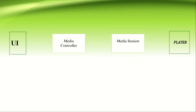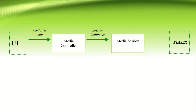The media controller helps us control the player — for example, play, pause, or anything else. We issue controller calls that go from the UI directly to the media controller, and the media controller talks to the media session, not directly to the player. We also have session callbacks implemented by the media controller to help control the playback state. Then the media session tells the player to play or pause audio, and returns data to the controller callbacks — for example, if the state has changed — using the media session keys, after which we update the UI.